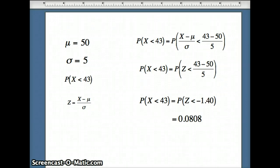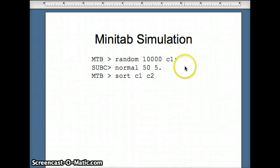Well, can we also use Minitab to generate a set of data to see if this is relatively close? We sure can, and here's our simulation requirements. We're going to say random 10,000 C1. This puts 10,000 numbers into C1, normal 55, from a population with a mean of 50 and a standard deviation of 5. We want to sort the data, putting it into C1 and C2 in order. And then our question is going to be how many of those are less than 43? What is the probability that x is less than 43?